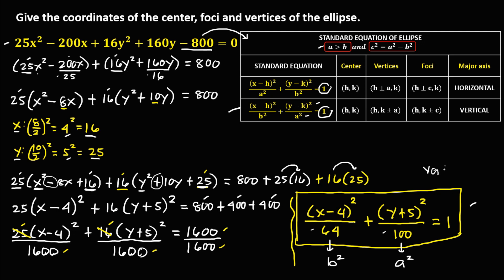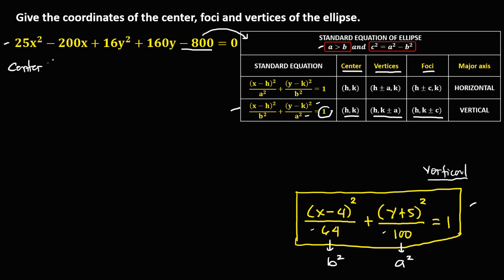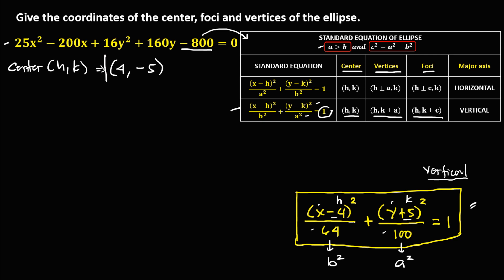This is a vertical ellipse. To find the center (h, k): from the standard equation, the x term gives h and the y term gives k. Since the x term is (x minus 4), h is positive 4. Since the y term is (y plus 5), k is negative 5. So the center is at (4, negative 5).